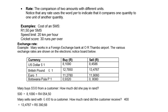Let's look at rate — the comparison of two amounts with different units. Remember, ratio compares the same unit, whereas with rate, we compare different units. Notice that any rate uses the word 'per' to indicate that it compares one quantity to one unit of another quantity.